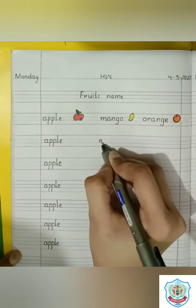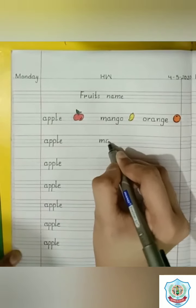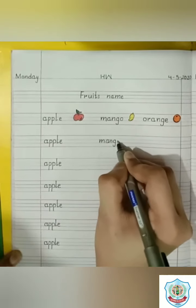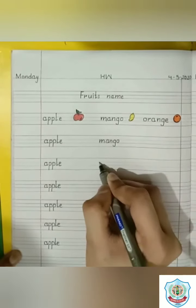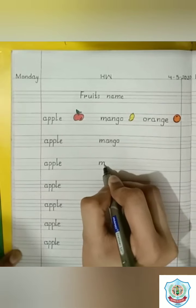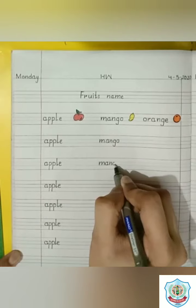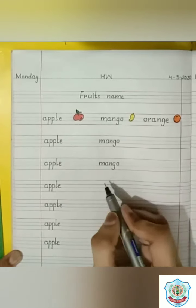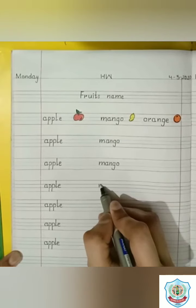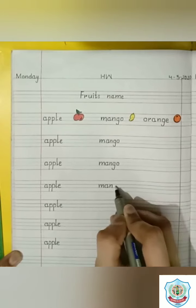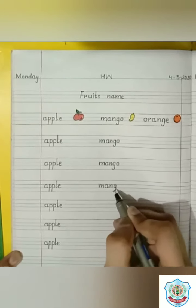Now write here mango. M, A, N, G, O. Mango. M has a sound M. A has a sound A. N has a sound N. G has a sound G. And O has a sound O. Mango. You know students, mango is king of fruits. And it comes in summer.